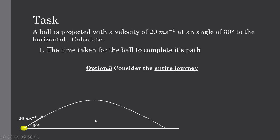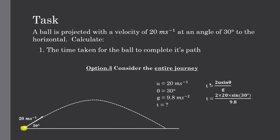A third approach is to consider the entire journey using a combined equation that takes the actual initial speed, the angle, and gravity, without separating into components. The equation is t = 2u sinθ / g. So 2 × 20 × sin(30) divided by 9.8 gives us 2.04 seconds. It's quicker and shorter, but can only be used when the projectile launches obliquely in a parabolic path and lands at exactly the same initial reference height.